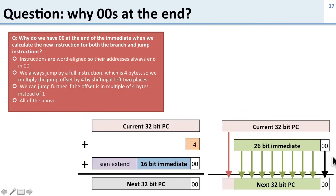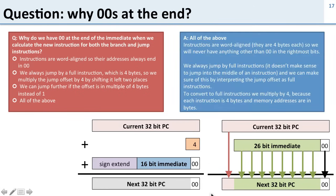Why do we have zeros at the end of the immediate for jumps and branches? Because all instructions are word-aligned, we know the bottom two bits will never be anything other than zero. There's no point having an immediate that could land us in the middle of an instruction. By shifting the immediate left by two — which is the same as multiplying by four — we effectively count in instructions rather than bytes, which also extends our reachable range.